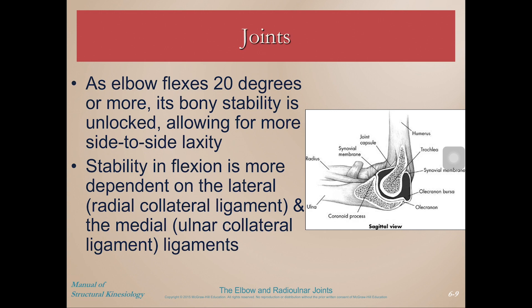As the elbow unlocks from the extended position at about 20 degrees or more of flexion, there is increased laxity of side-to-side motion. Stability during flexion becomes more dependent on two ligaments: the lateral collateral and the medial collateral ligaments, more commonly known as the radial collateral ligament and the ulnar collateral ligament.